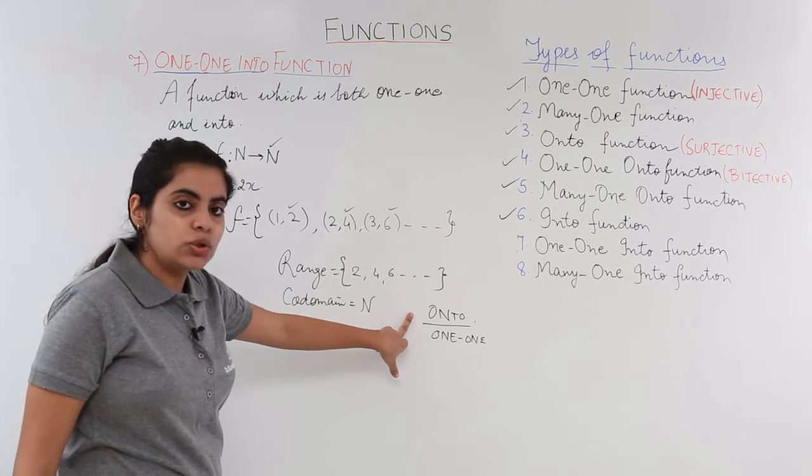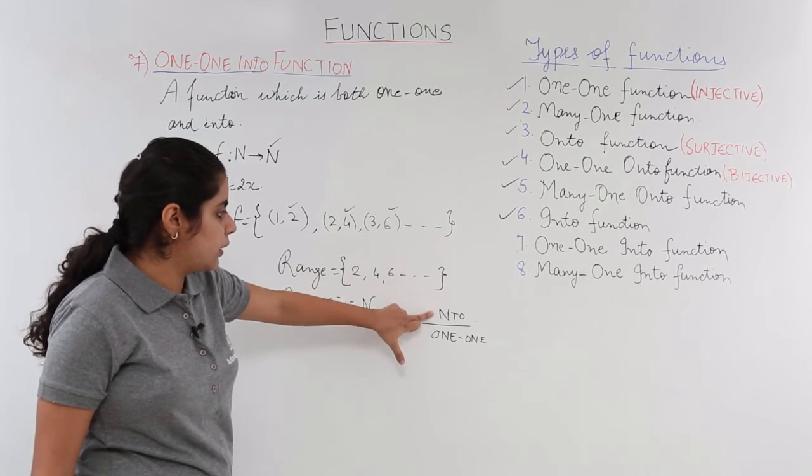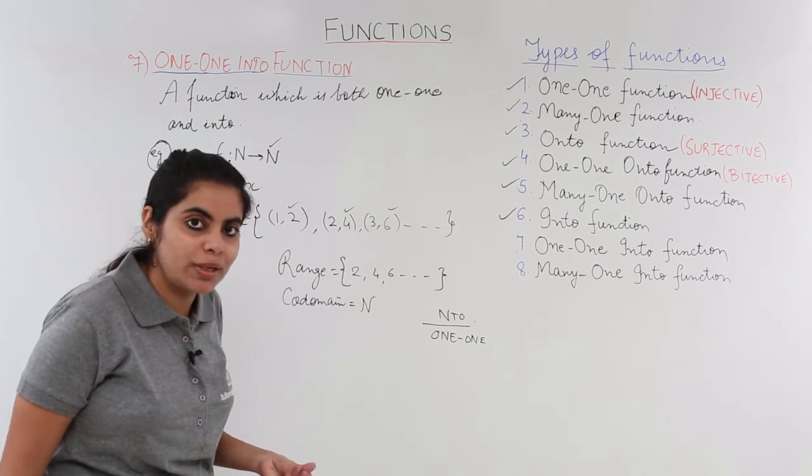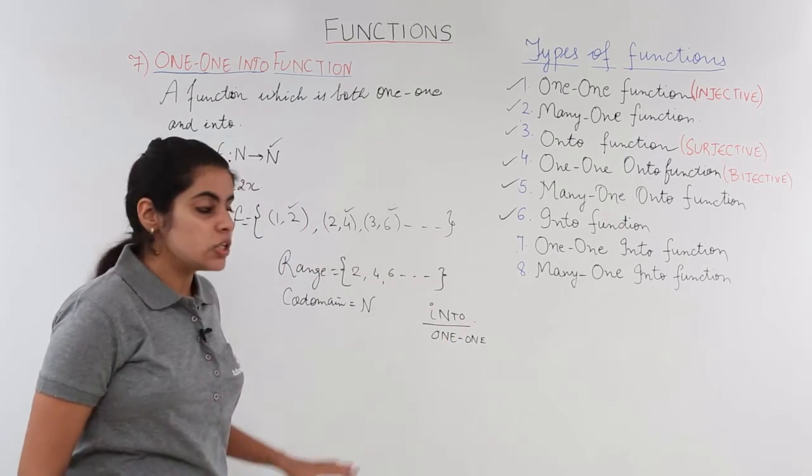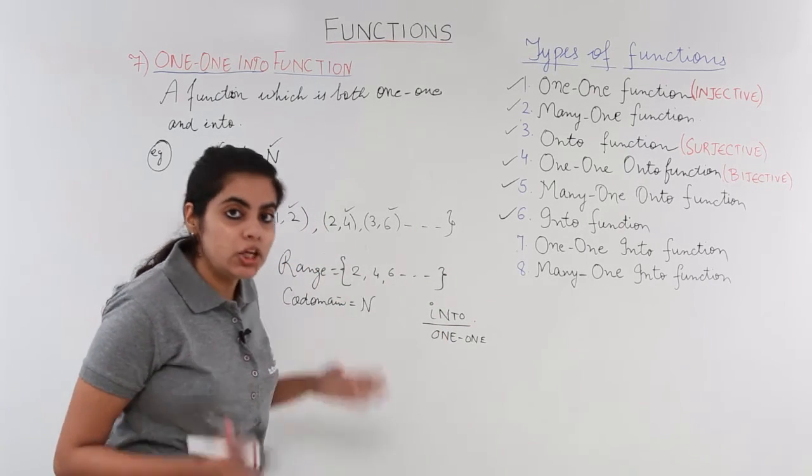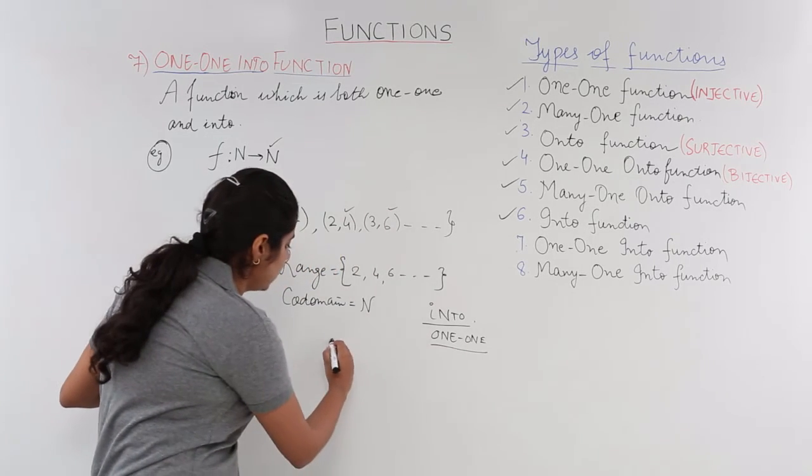Now, this could not be onto. The reason being that range is a subset of codomain, range is not equal to codomain, so this has to be into. This is a correction which we need to make. So this is one-one and into both, so it clubs together to one-one into function.